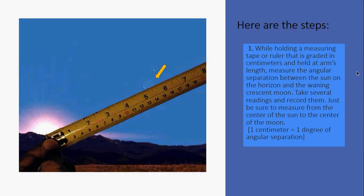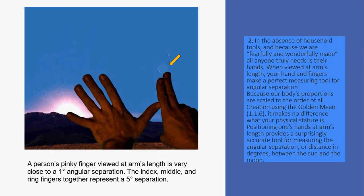In the absence of household tools, and because we are fearfully and wonderfully made, all anyone truly needs is their hands. When viewed at arm's length, your hands and fingers make the perfect measuring tools for angular separation. Because our body's proportions are scaled to the order of all creation using the golden mean, it makes no difference what your physical stature is. Positioning one's hand at arm's length provides a surprisingly accurate tool for measuring the angular separation, or distance in degrees, between the sun and the moon.